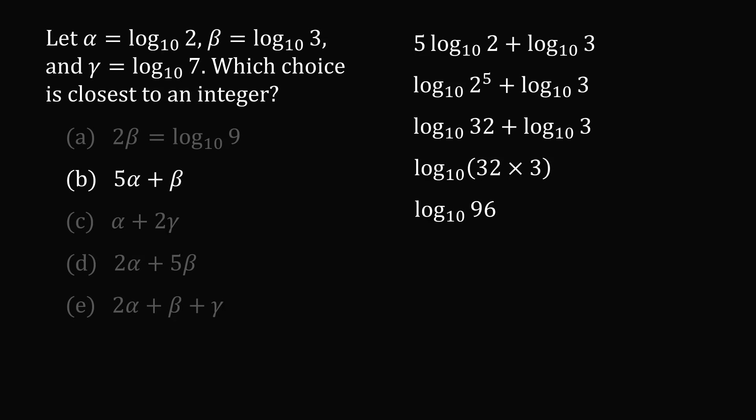Now, where do we go from here? Well, we can rewrite this. 96 is equal to 10 multiplied by 9.6. We can now split this up into a sum. Log base 10 of 10 is equal to 1. So the final result is 1 plus log base 10 of 9.6. That is answer choice B.